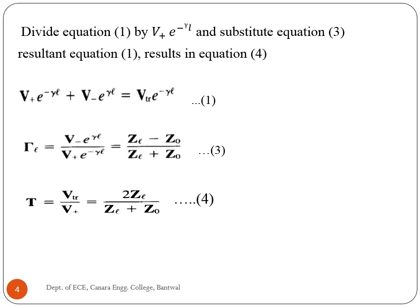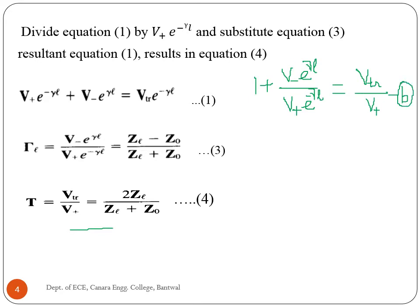Now, divide equation 1 by V+ e to the power minus gamma L and substitute equation 3 into the resultant equation to get equation 4, the transmission coefficient equation. Dividing equation 1 by V+ e to the power minus gamma L gives V_TR divided by V+. Substituting equation 3 into equation B gives 1 plus gamma_L, where gamma_L is the reflection coefficient at the load end.